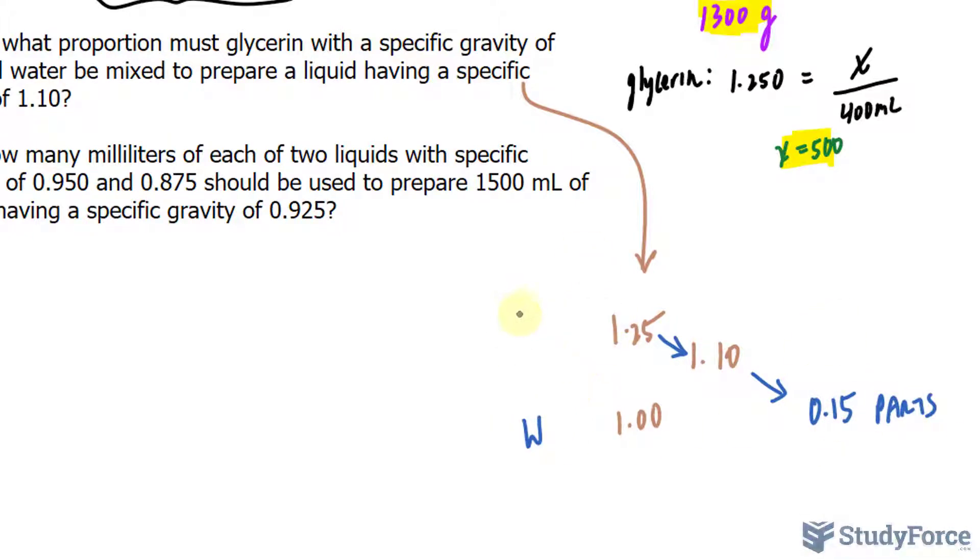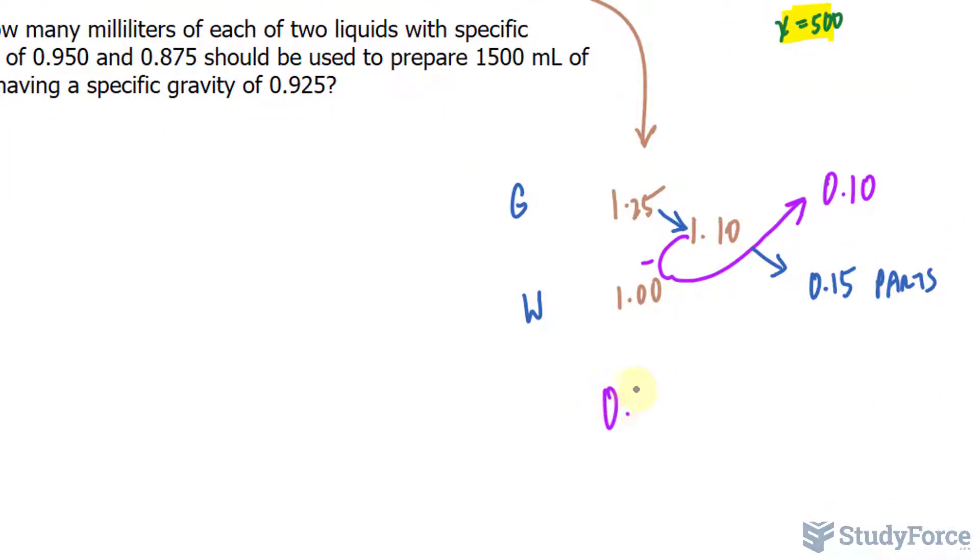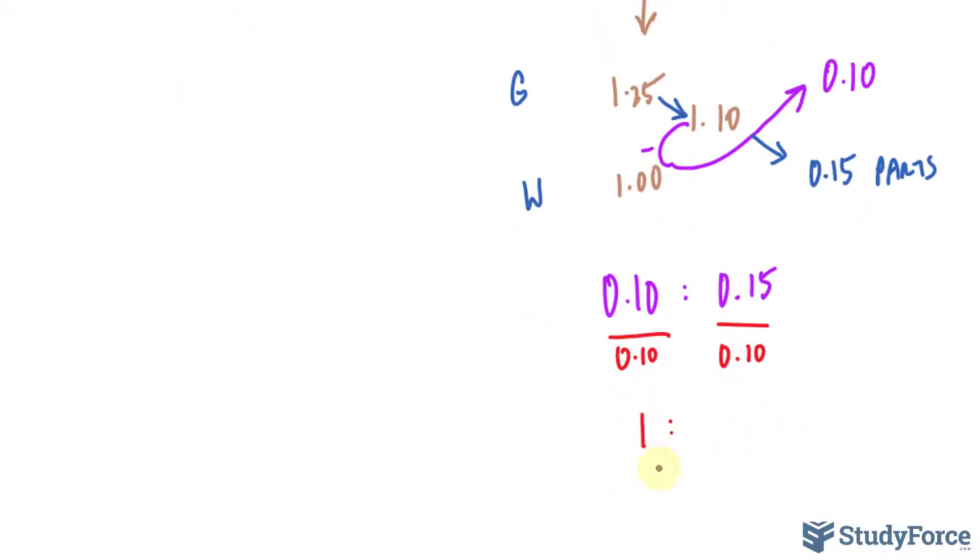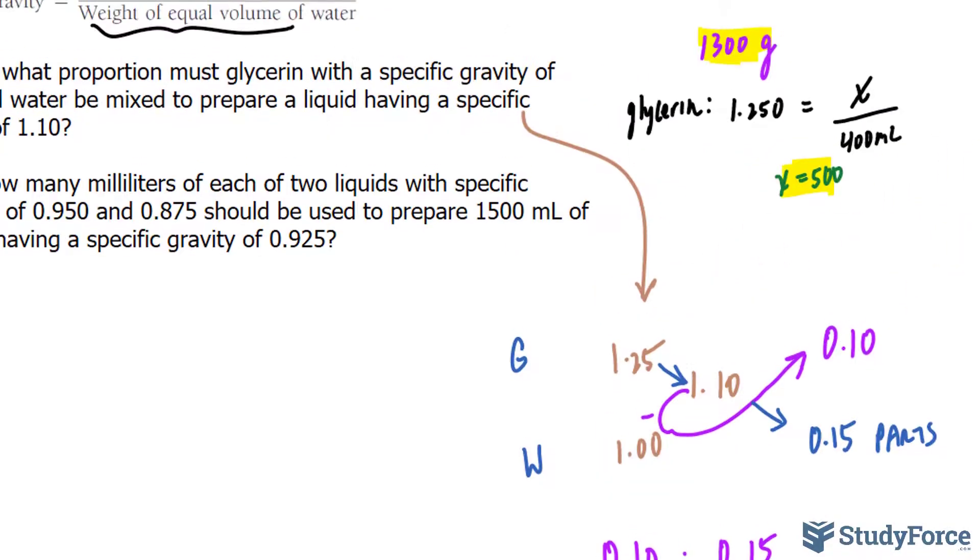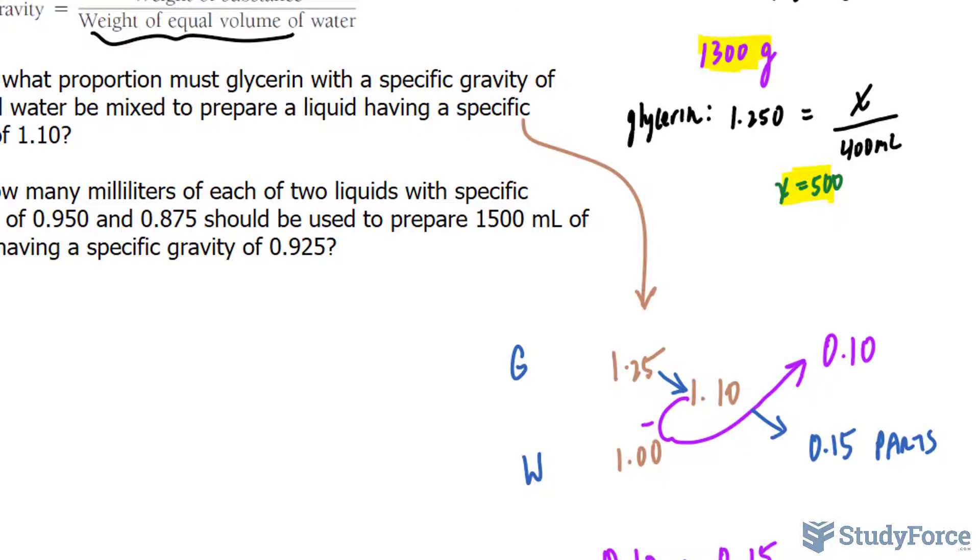So we need 0.15 parts of water, because that's water and that's glycerin. And to find out how many parts of glycerin we need, I will take this number, subtract it with that number, and it will go up here. So 1.10 minus 1.00 is 0.1. And that suggests that we need 0.1 parts of glycerin and 0.15 parts of water. Now you can write this ratio down into a unit ratio by dividing both of these terms by the lowest of the two numbers, which is 0.10. So if I divide both by 0.10, I end up with 1 to 1.5. And I got that value by dividing these two out. So 1 part glycerin, 1.5 parts water will produce 1.10 as the specific gravity of the new mixture.